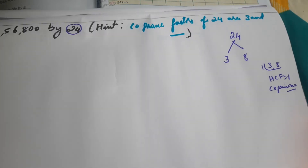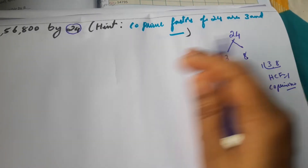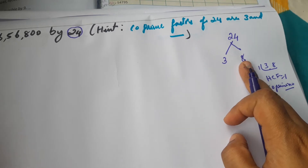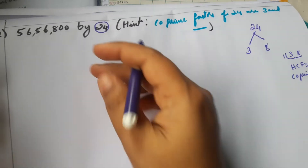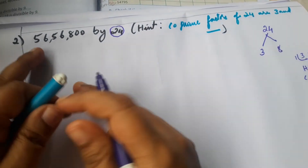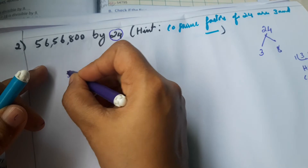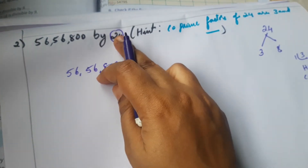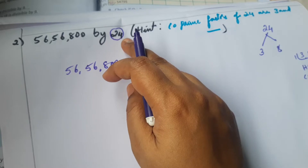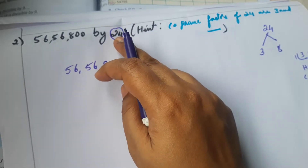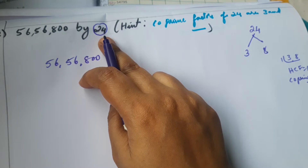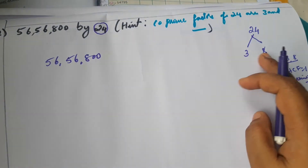Since HCF is 1, this is a co-prime number. 3 eights are 24, and the common factor of 3 and 8 is 1. We can take composite or prime numbers. Now we check the divisibility of 56,56,800 by 24. Instead of dividing directly by a large number, we use the co-prime factors of the divisor — here 3 and 8 are co-prime factors of 24.